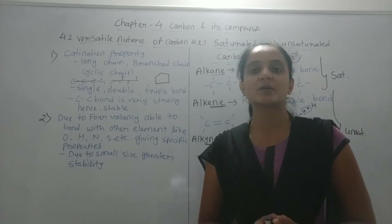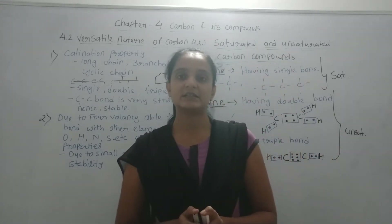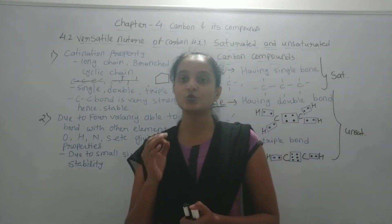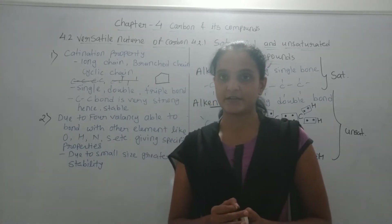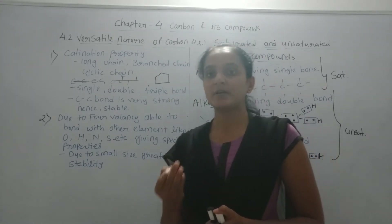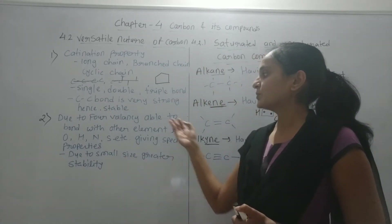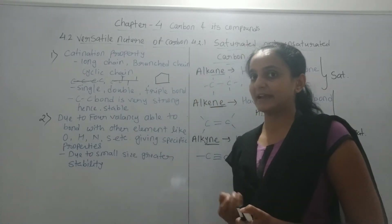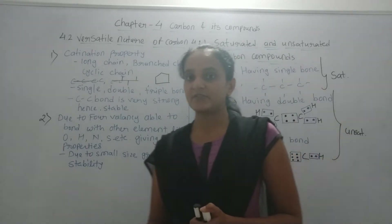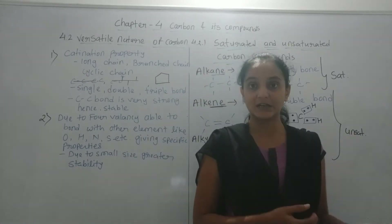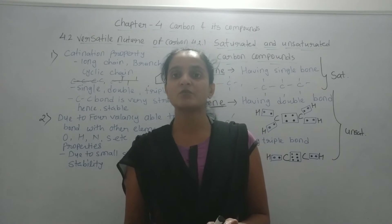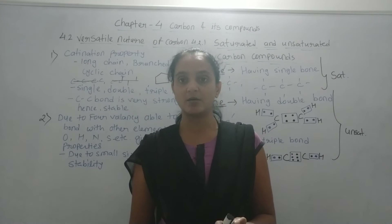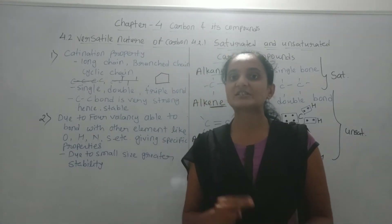That's why carbon possesses versatile nature — that is the first point. Now the second point: due to the four valency of the carbon atom, carbon is able to bond with other elements like oxygen, hydrogen, nitrogen, sulfur, etc. Because of that, carbon forms bonds with other elements and the resulting compounds possess specific properties.